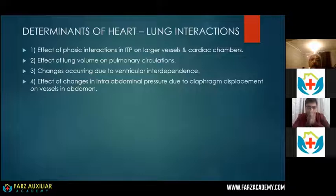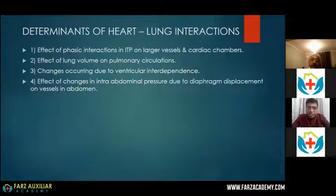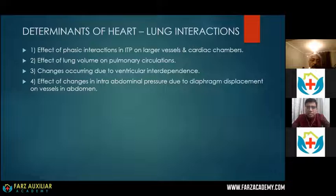Coming to the determinants of heart-lung interactions, there are mainly four. First, the effect of phasic changes in intrathoracic pressure on large vessels as well as cardiac chambers. Second, the effect of lung volume on the pulmonary circulation. Third, the changes occurring during ventricular interdependence. And fourth, the effect of changes in intra-abdominal pressure, which also has implications on intrathoracic pressure, because the intra-abdominal and thoracic compartments are separated by the diaphragm — which is not a rigid wall — so pressure changes on either side reflect on the other side as well.